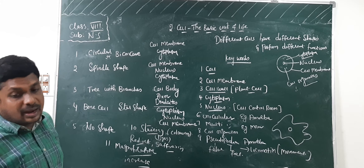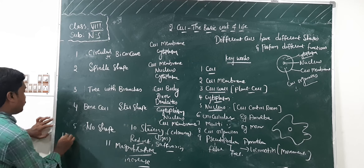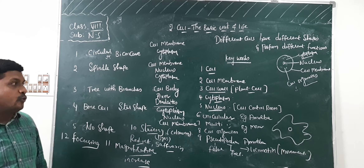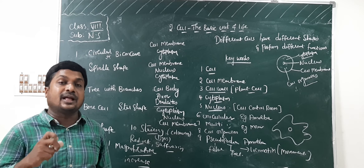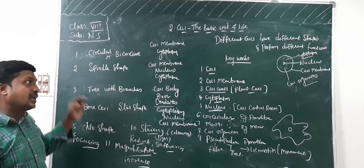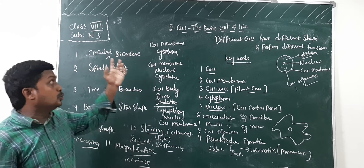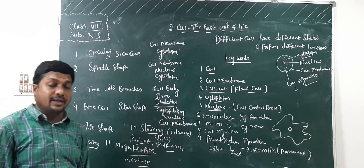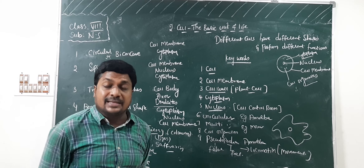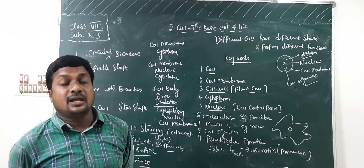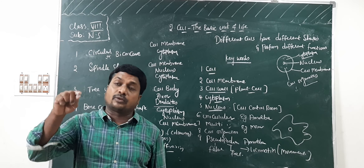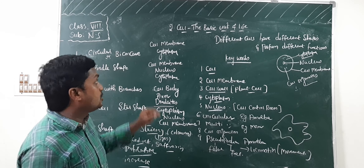The last keyword is focusing. Focusing means seeing the object — cells — clearly. That is called focusing when using a microscope. So all these are the keywords present in lesson 2, 'Cell: The Basic Unit of Life.' Up to here we have completed the second lesson. In the next class, I will start the third lesson — 'Story of Microorganisms' — which has two parts. Learn it properly. Thank you, children.